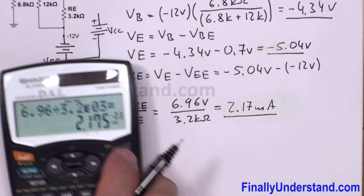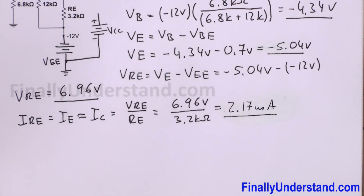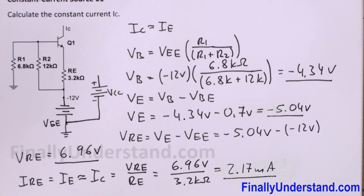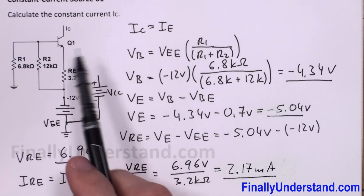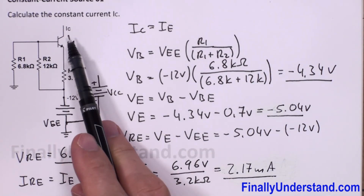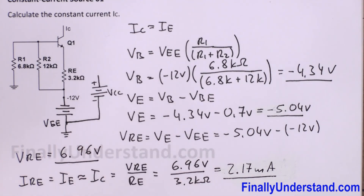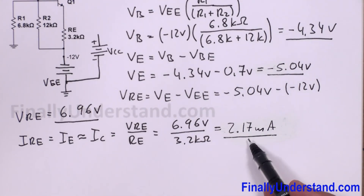And this is approximately the value of the current going into the collector of the transistor. IC is approximately 2.17 milliamps — and this is the answer to the problem.